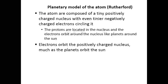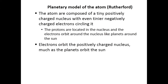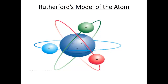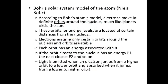J.J. Thomson had said the electrons were scattered throughout the atom, but Rutherford's idea was that the protons are concentrated in the nucleus and the electrons orbit the nucleus like planets orbit the sun. Rutherford continued thinking about how the electrons are arranged in their shells inside the atom, within those energy levels.